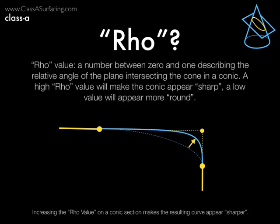For Class A surfacing, the most common use for conics will be as a blend between two curves or surfaces. Usually, this is accomplished by providing two tangent surfaces and contact points for each, and what is called a rho value to define the curve's sharpness. In other cases, it's not uncommon to use a third contact point instead of a rho value if you have a through point that you need to hit.